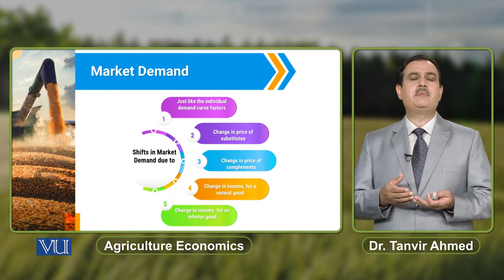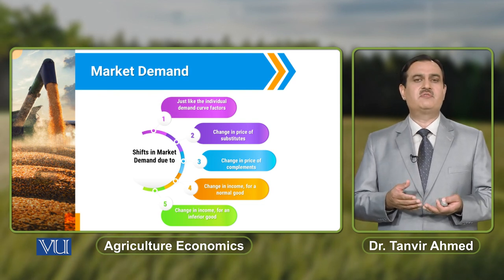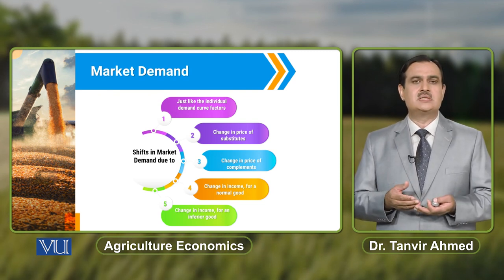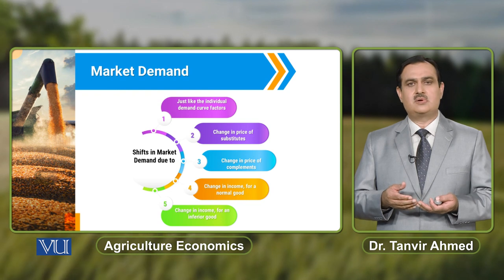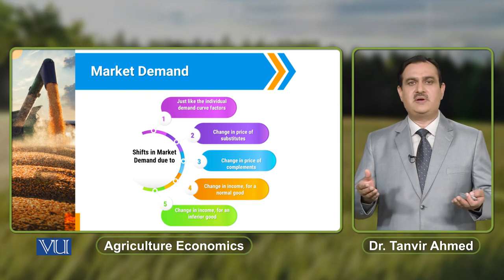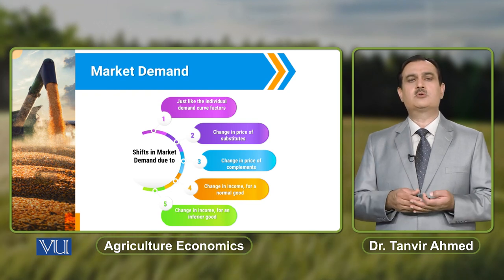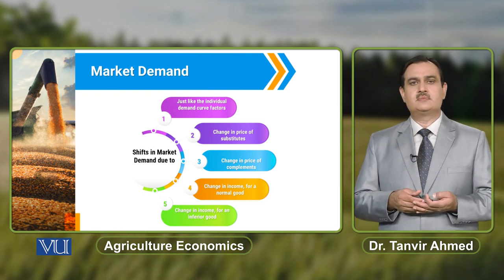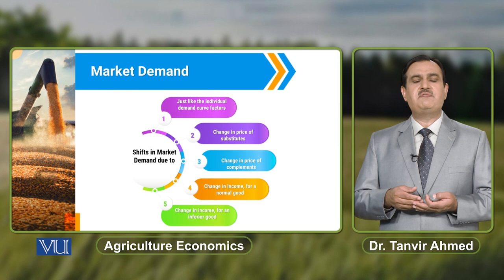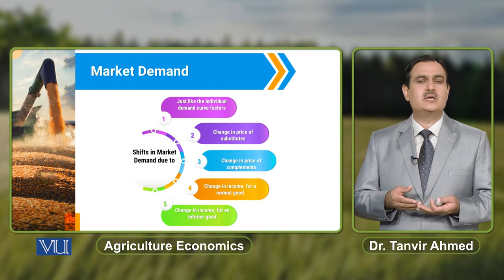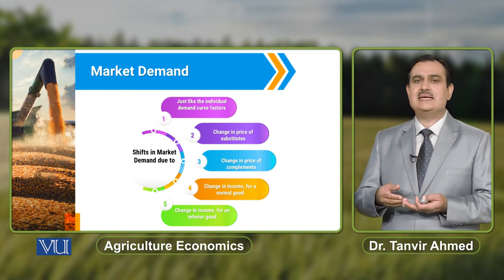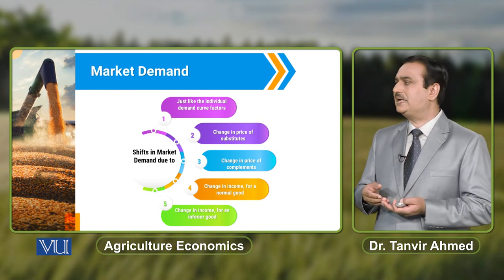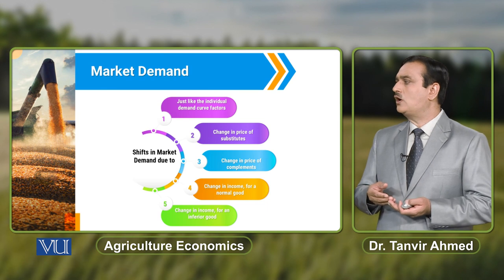For example, it might be possible that for a few individuals, beef is an inferior commodity. If the income of the household increases, then it might be possible there is a decrease in demand for beef.